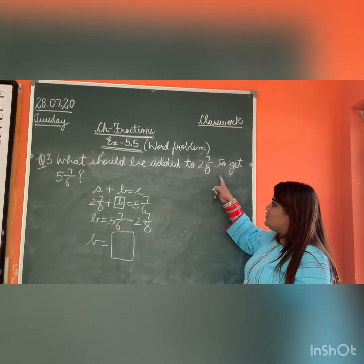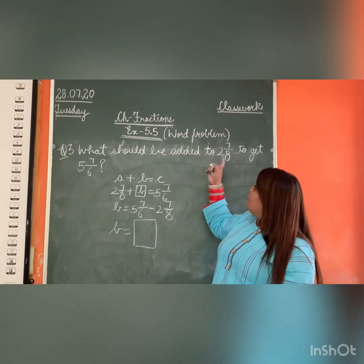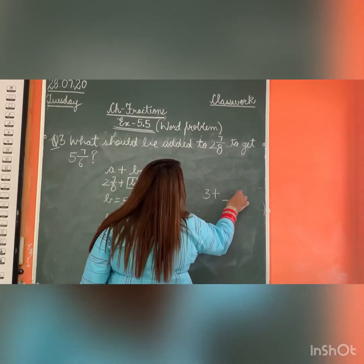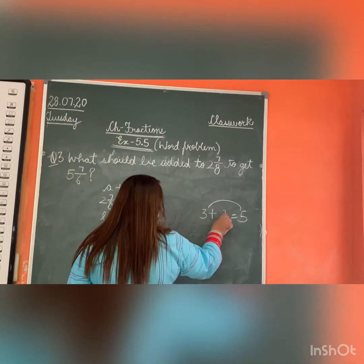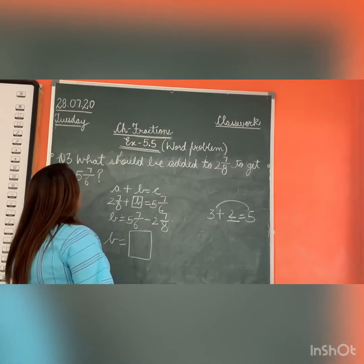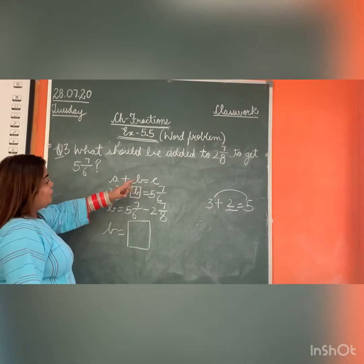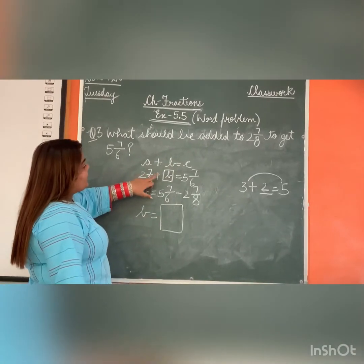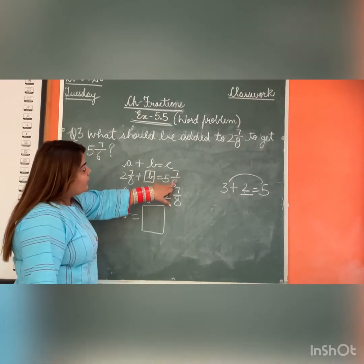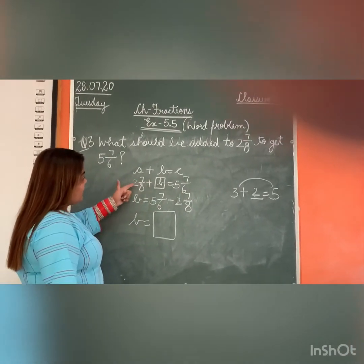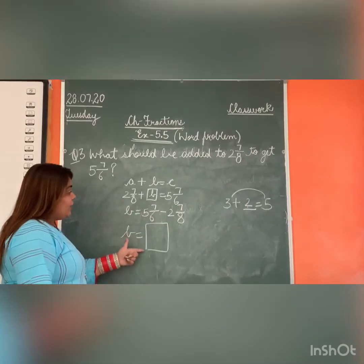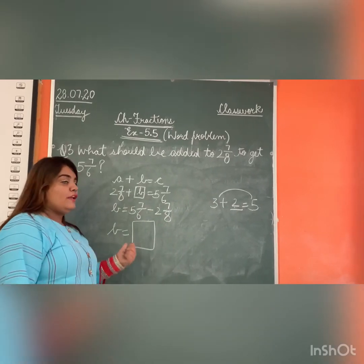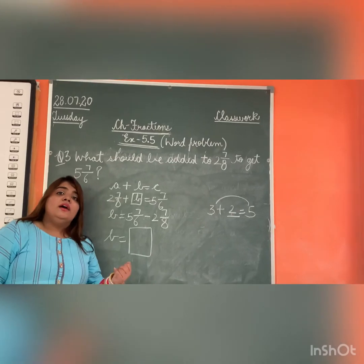And after making it like fractions we will subtract and get the answer. Question 3: What should be added to 2 7 by 8 to get 5 7 by 6? For example, mein 3 mein kya add karu ki mera 5 ho jaye? 5 minus 3 is 2. 3 mein 2 add karu ki mera 5 ho jayega. Similarly, 2 7 by 8 tumhe patane usmein kya add karu, maine isko B man liya, ki mera 5 7 by 6 aajaye. Toh yaha plus hai, yaha idhar jage kya ho jayega minus. Toh mari B ki value aajayega. Pehle aap isko improper fraction mein convert karenge and then isko like fraction banaenge, phir subtract karke answer nikalenge.